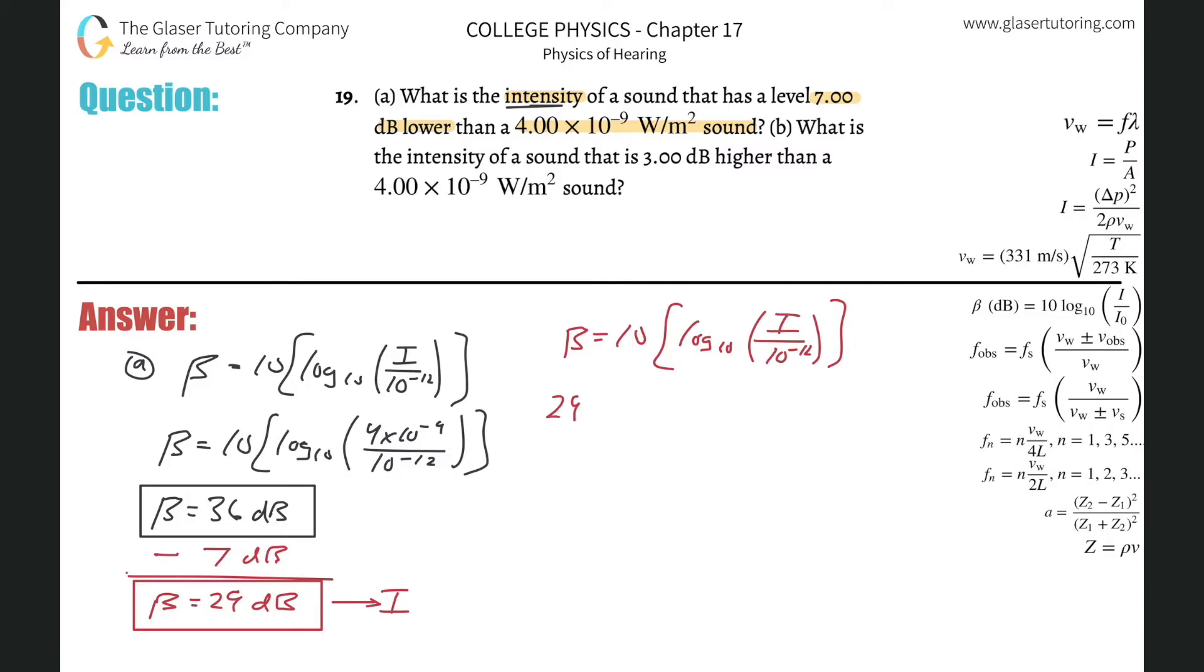The decibel value now is 29. And that's going to equal 10 times the log base 10 of I over 10 to the minus 12. I know my handwriting is getting sloppy. Divide out the 10 from the right hand side over to the left. So that's going to be 2.9 equals log of base 10 times I over 10 to the minus 12.